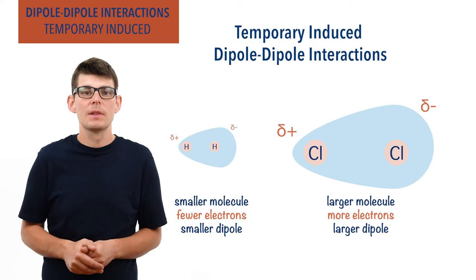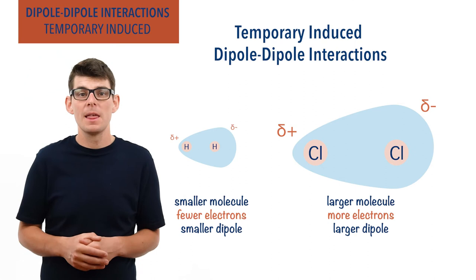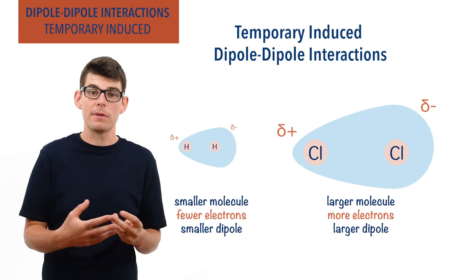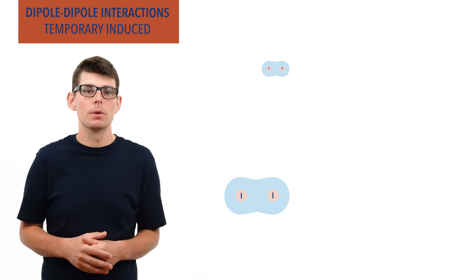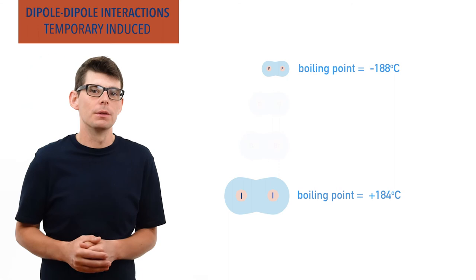Small molecules only have small temporary dipoles as they contain fewer electrons, and this means they are only held together by weak temporary induced dipole-dipole interactions. Very little energy is required to overcome the attractions, giving molecular substances made up of small molecules lower melting and boiling points. This can be seen with the halogens. Fluorine is the smallest halogen, meaning F₂ is the smallest halogen molecule. Iodine is the largest halogen, meaning I₂ is the largest halogen molecule. The boiling point of fluorine is −188°C and the boiling point of iodine is 184°C. Chlorine and bromine are in the middle, but the boiling points increase with the size of the halogen molecule.